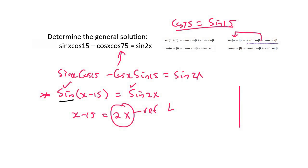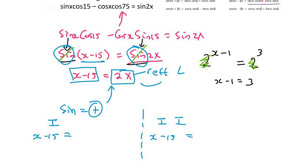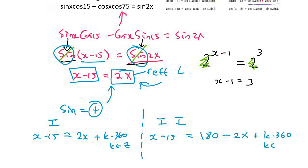To work out whether sin is positive or negative, look in front of the sin on the right-hand side — there's no negative, so we work in the quadrants where sin is positive. From our CAST diagram, that's quadrant 1 and quadrant 2. You start with x − 15 in each case: in quadrant 1, x − 15 = 2x + k·360; in quadrant 2, x − 15 = 180 − 2x + k·360, where k is an element of Z.